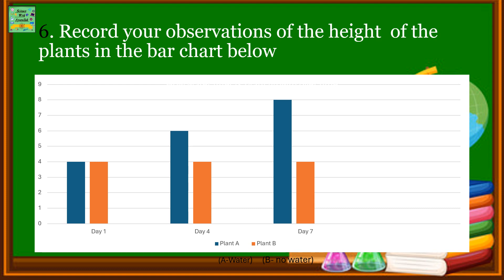On day 1 both plants' heights were the same. But on day 4, plant B which had no water remained the same height, however plant A's height had increased. On day 7, plant B remained the same height but plant A's height increased drastically.